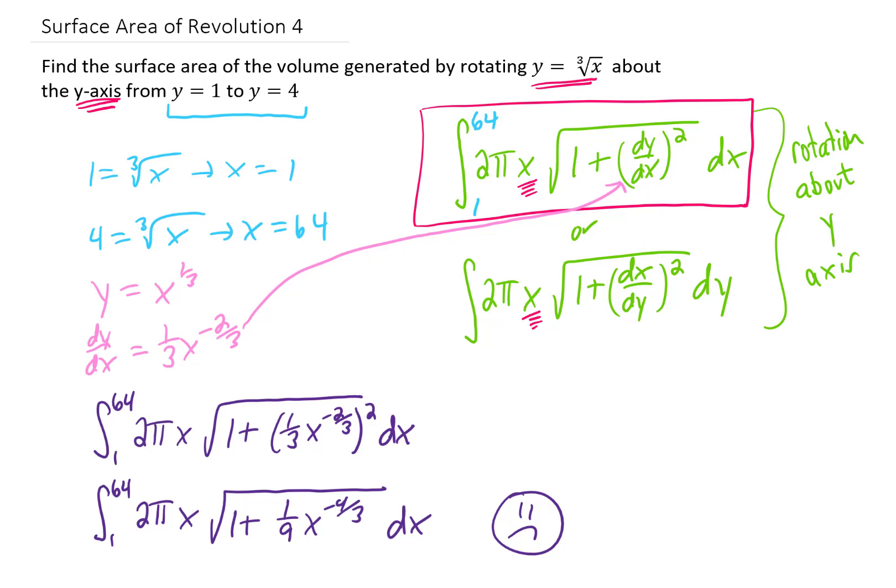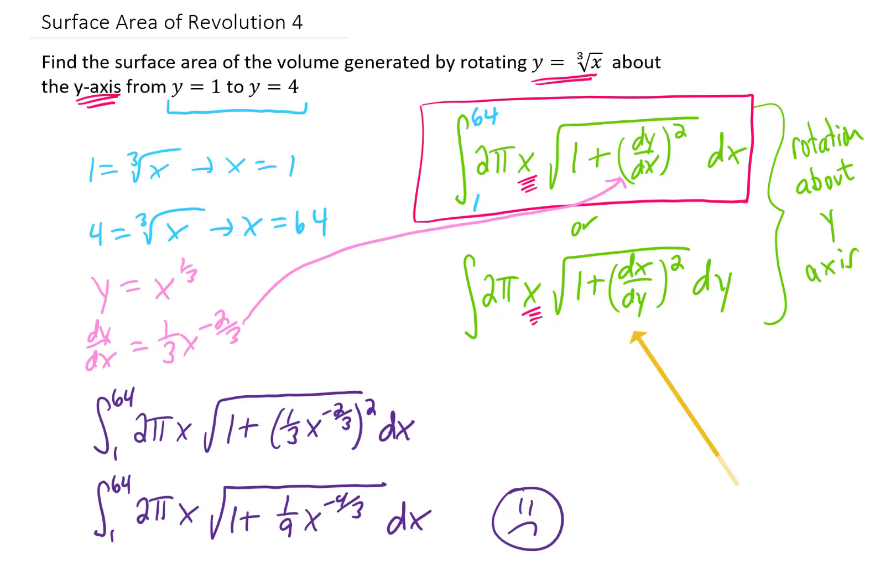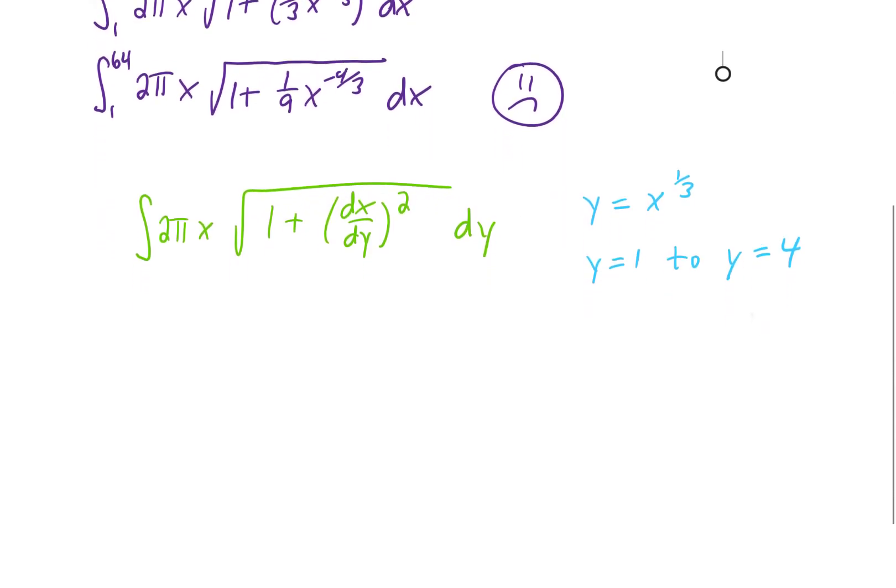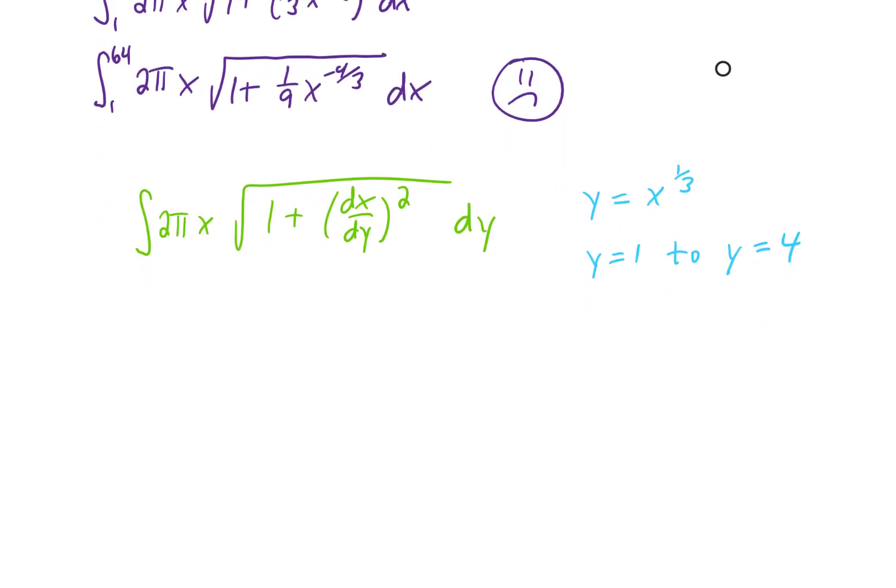We could probably work on it for a while and get it to work out, but I'm wondering now if maybe we should use this other formula up here. Maybe we should try to integrate this with respect to y. Let's just see what happens. Now, just copying all the information down from the original problem, here's what we're given. If we're integrating now with respect to y, our limits will just go from 1 to 4.